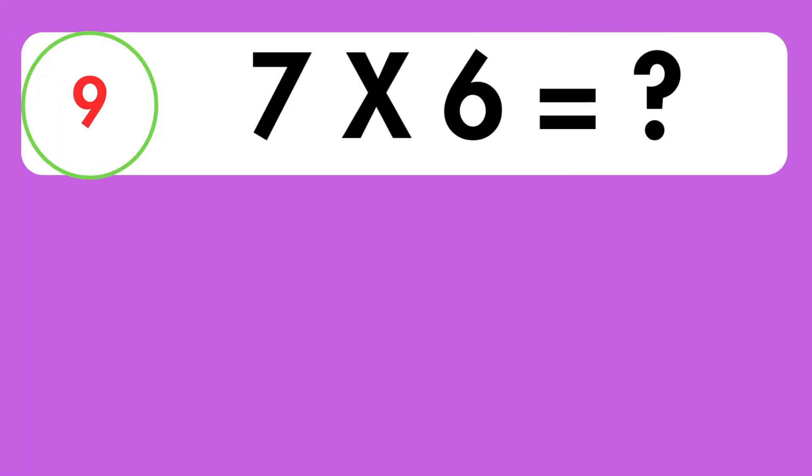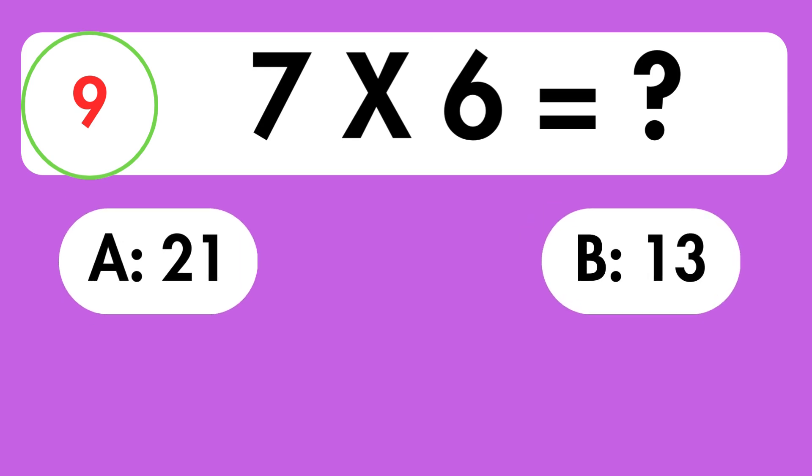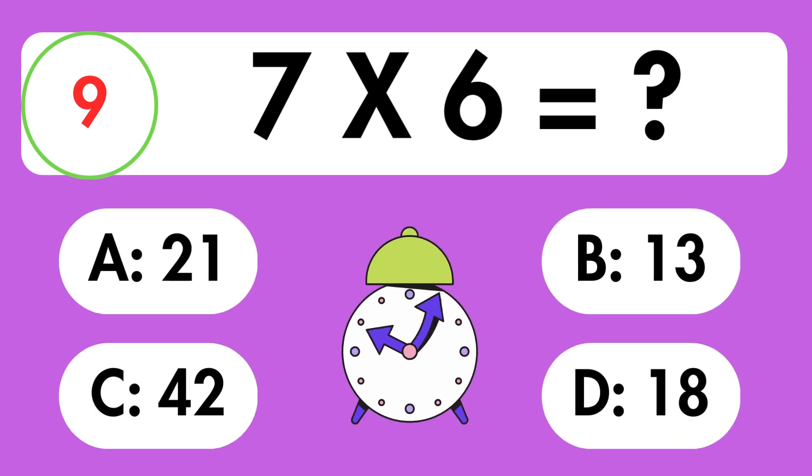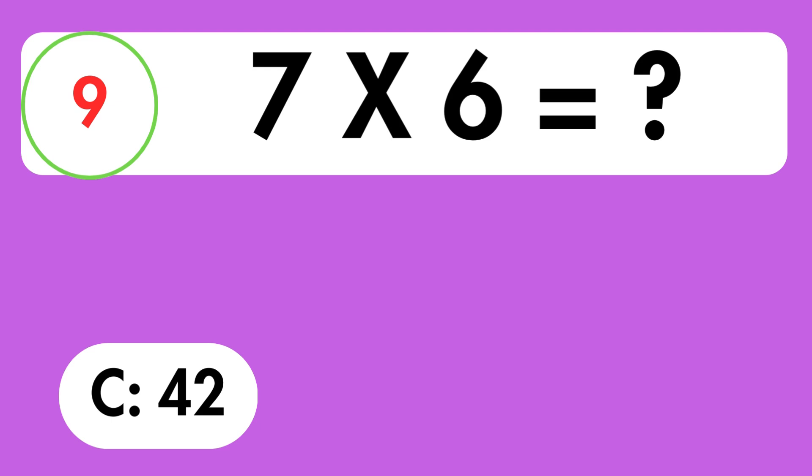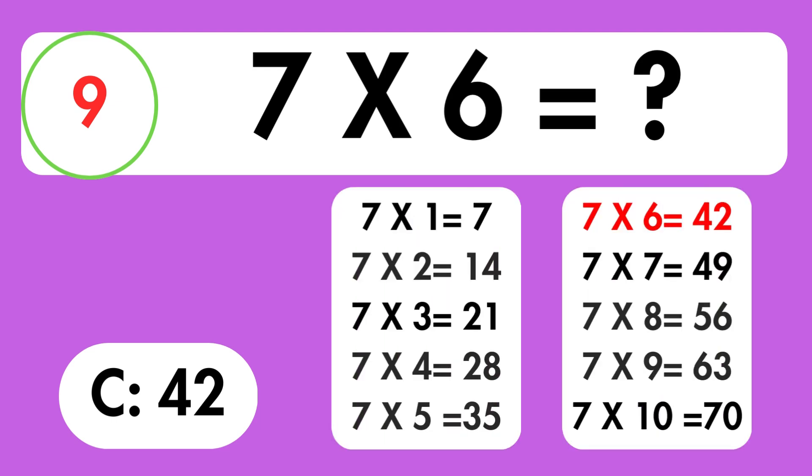8 times 8 is equal 64. Question 9. What is 7 times 6 equals? Time's up. The answer is 42.